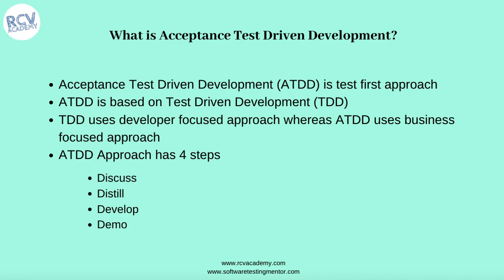Acceptance test driven development is the test-first approach, similar to test driven development and based on it. The difference is that in TDD, developers develop the test cases — it's more developer-focused — whereas acceptance test driven development is more business-focused. When writing test cases in ATDD, you focus on business processes and how the end user will interact with the system, rather than the developer coming up with test cases based on his understanding of the requirement.